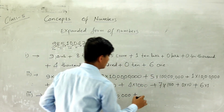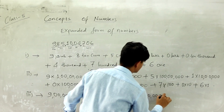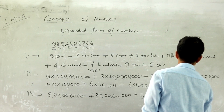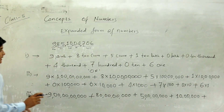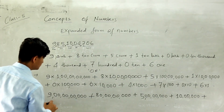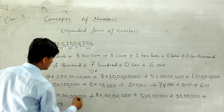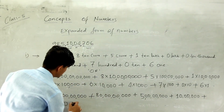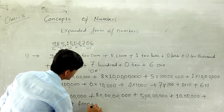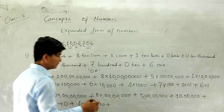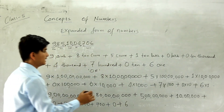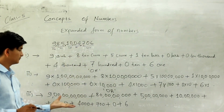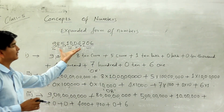Then five crores. After that, zero into one lakh — you can directly put zero, because any number multiplied by zero is zero. Then zero ten thousand. After that, four thousand plus seven hundred, then zero into ten which is zero, plus six into one which is 6. These are the three forms — in these three ways you can expand this number.